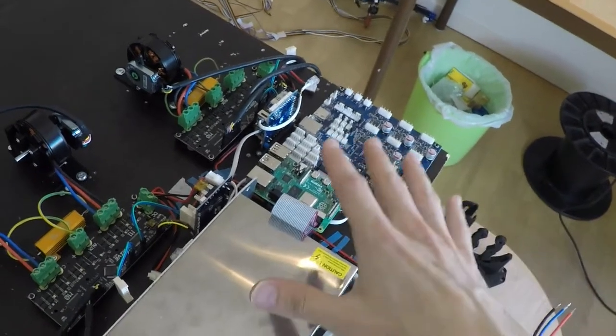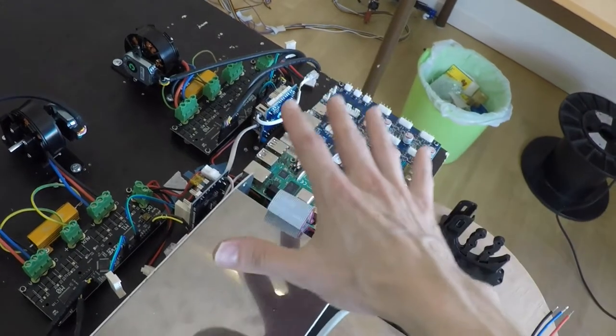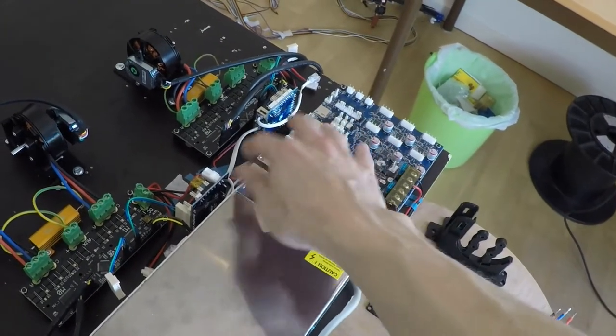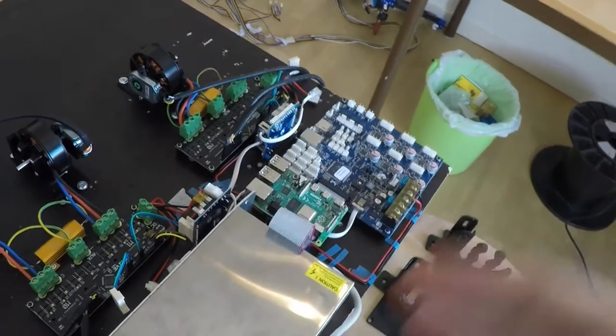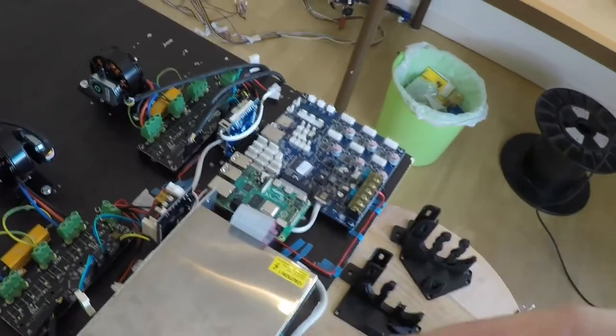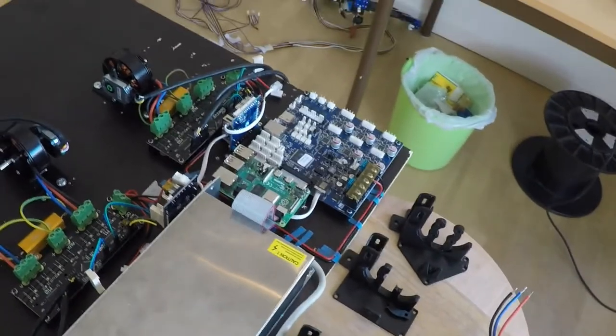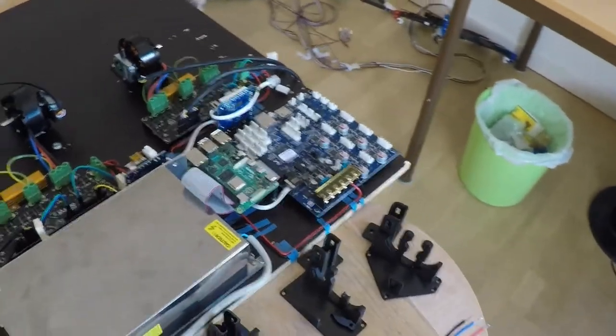In a few months we won't need these expansion boards for small machines like this. Big machines will have great use of these expansion boards because they can be placed further away from the main board without a deteriorating signal. But yes, this is what it looks like.